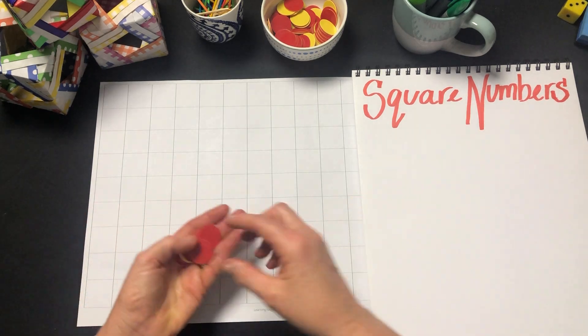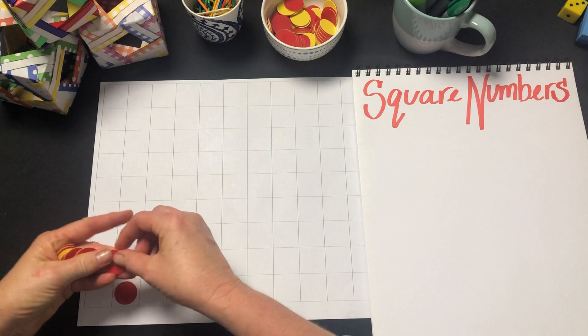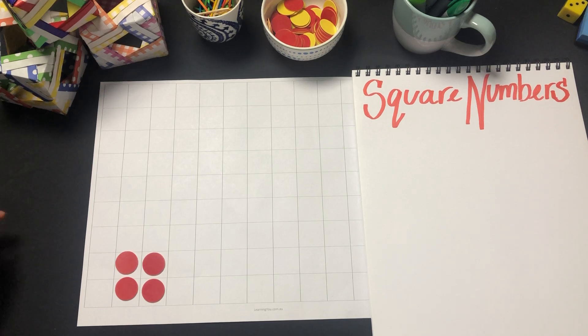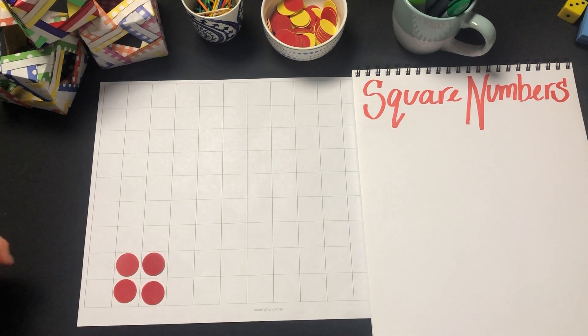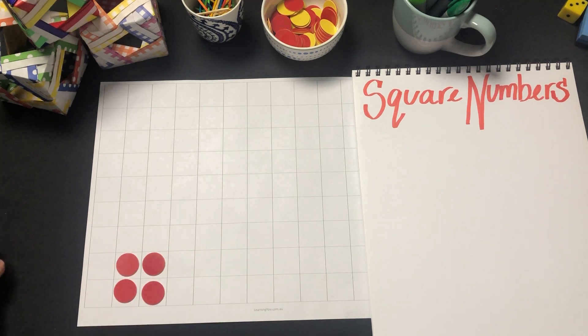In other words, if I have a number of counters and I can create a square like I've done here, then that number of counters is a square number. So 4 is a square number and it creates a square that's 2 by 2. Sides equal to 2.